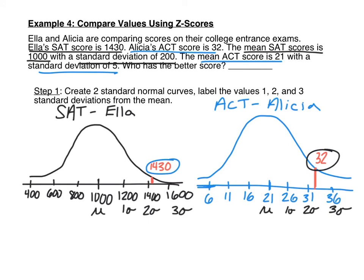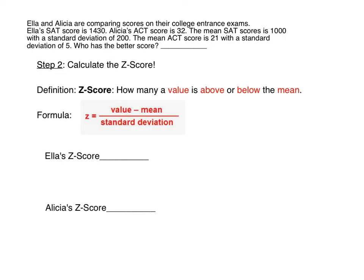In order to answer who scored better, we need to introduce a new measure called a z-score. A z-score tells us how many standard deviations a value is above or below the mean. The formula for calculating the z-score is: z equals the value minus the mean, divided by the standard deviation. Make sure you get the definition as well as the formula written down in your notes.